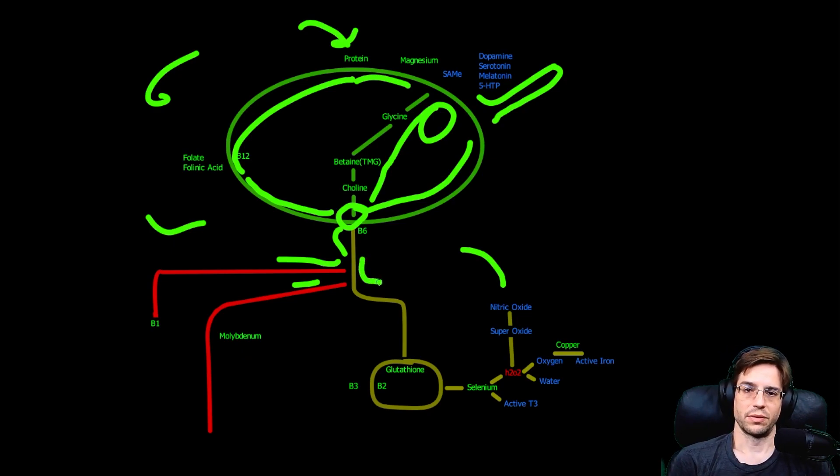So if the cysteine does make its way down here, we start generating and recycling glutathione through this. This depends on B2 and B3. B2 is also known as riboflavin, and B3 is also known as niacin. As this is running and we have those extra nutrients to get it around, it's also depending on and utilizing selenium.